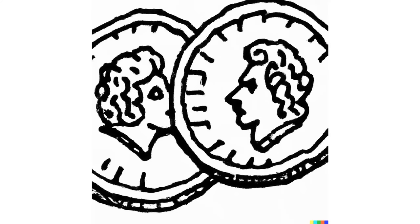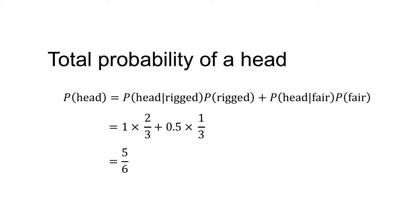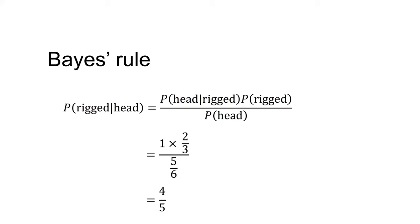Your friend flips the coin again and gets another head. What is the updated probability that the coin is rigged? The prior belief is now P(rigged) = 2/3 from our last answer. The total probability of flipping a head equals 1 × 2/3 + 0.5 × 1/3 = 5/6. Putting this into Bayes' rule: P(rigged|head) equals 1 × 2/3 divided by 5/6, which equals four-fifths.